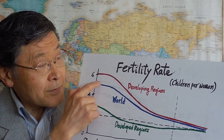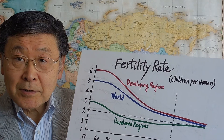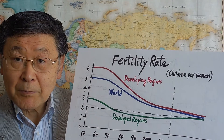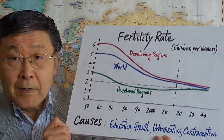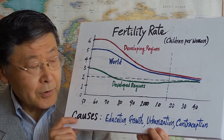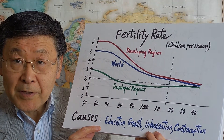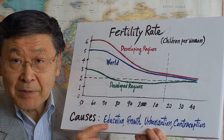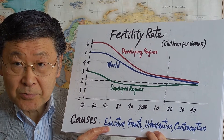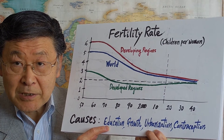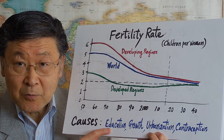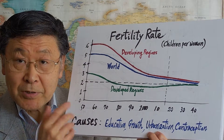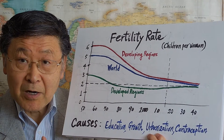What caused this decline in the fertility rate, especially among developing economies? Causes include several things. First, education — not just family planning type education, but all kinds of education — which makes people think more wisely about family planning. Educating children also involves costs: time costs and financial costs, so people are more careful about having more children.